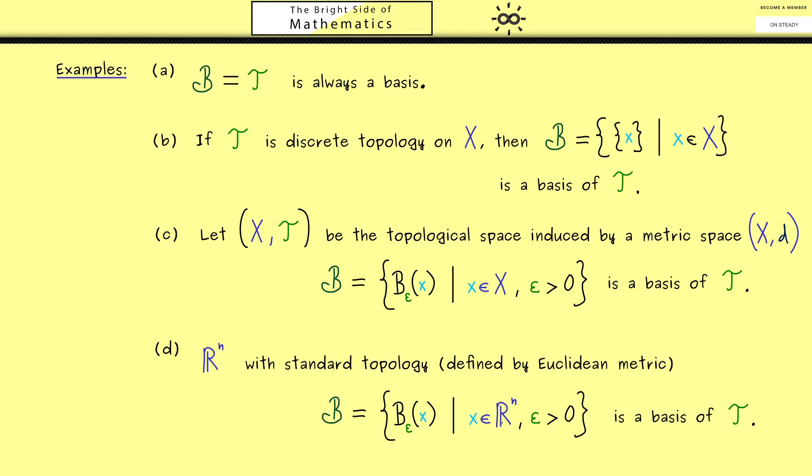However, it turns out we don't need all the points because we have a dense subset. It's sufficient to look at rational points because for all other points we can get as close as we want. And in the same sense, the radius epsilon can also be just a rational number. However, of course, it still needs to be greater than 0. Now you might ask, what is the advantage of this basis in contrast to the one we had before?